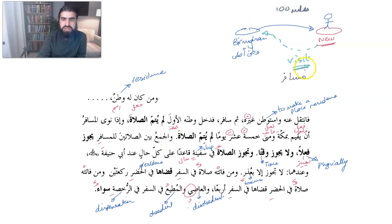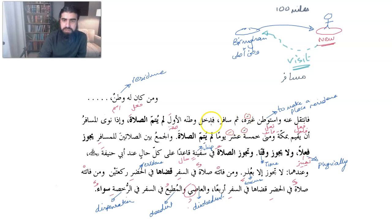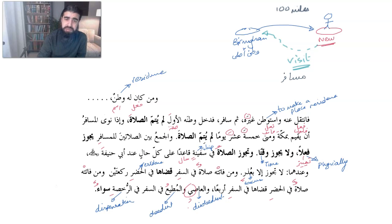Whoever has a permanent Watan and then moves from that place and makes residence in another place, he's no longer considered a resident of the first city. So if you move from one place to another, that old place you used to live at is no longer your residence. And then if he travels and enters the first Watan — Birmingham — again, he does not complete his salat; he is considered to be a Musafir.